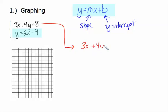We start with 3x plus 4y equals 8. And the first thing we need to do is get that 3x off the left-hand side. So we subtract 3x from both sides. We end up with 4y is equal to negative 3x plus 8.